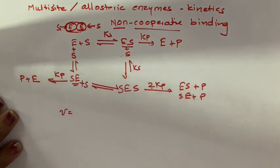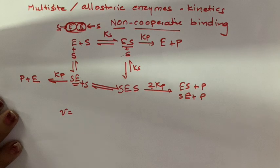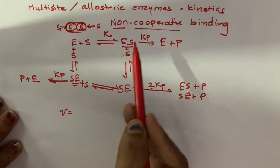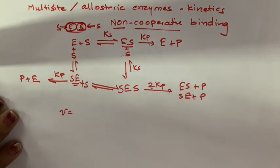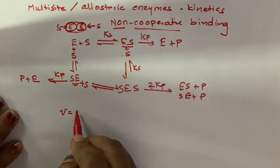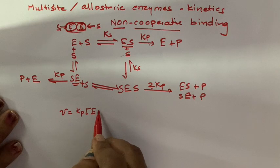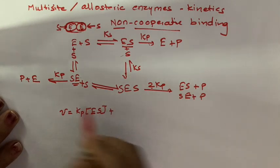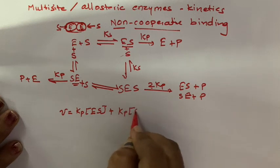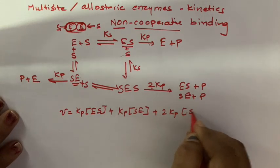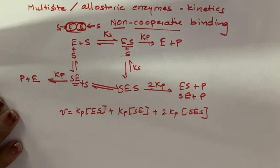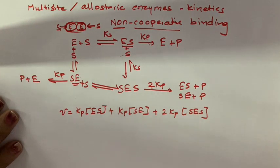In a normal uni-uni reaction we write V = Kp × [Es]. But here there are three steps leading to product formation. So the instantaneous velocity is: V = Kp×[Es] + Kp×[Se] + 2Kp×[S-Es]. Now we divide this equation by the total enzyme concentration.